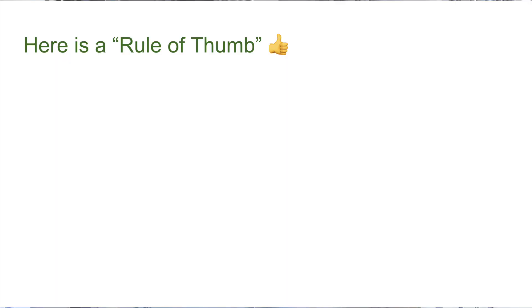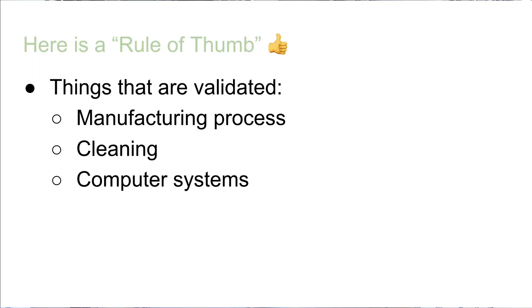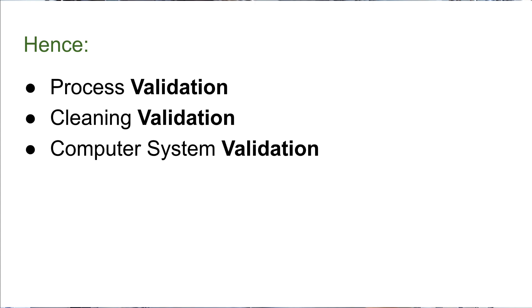So here's an easy rule of thumb. Things that are qualified would be equipment, ancillary systems, instruments, and utilities such as steam, water, and air. Things that are validated include manufacturing processes, cleaning, and computer systems — hence you get process validation, cleaning validation, and computer system validation.